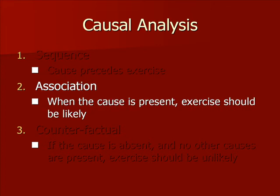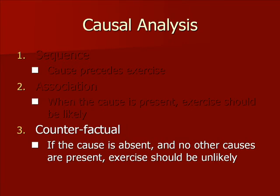The second criteria is that when the cause is present, exercise should be likely. There should be an association between the presence of the cause and the occurrence of the exercise. This we can establish through analysis of the diary data. Last, we need to make sure that if the cause was absent and there were no other causes of exercise present, then exercise would have been unlikely. In other words, we need to make sure that the listed causes are the mechanism by which the exercise occurs.